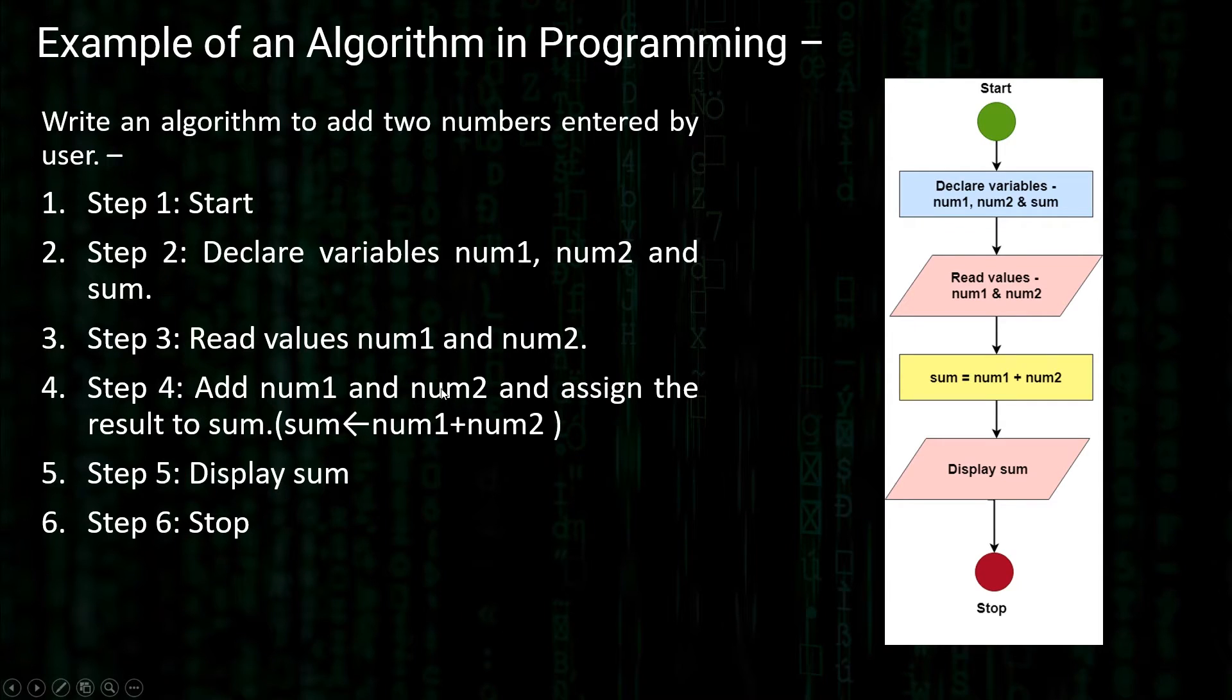Step four is addition of num1 and num2 and storing it in the third variable sum. Step five is to display that sum and step six is we've completed the process. This is how a typical algorithm in programming terms looks like wherein you literally write down all the steps properly.